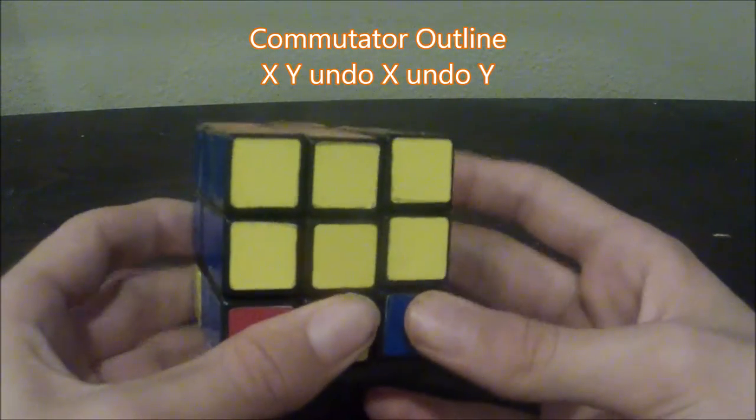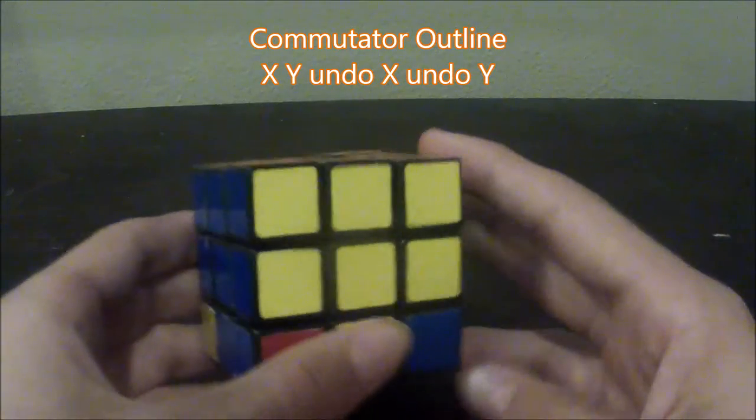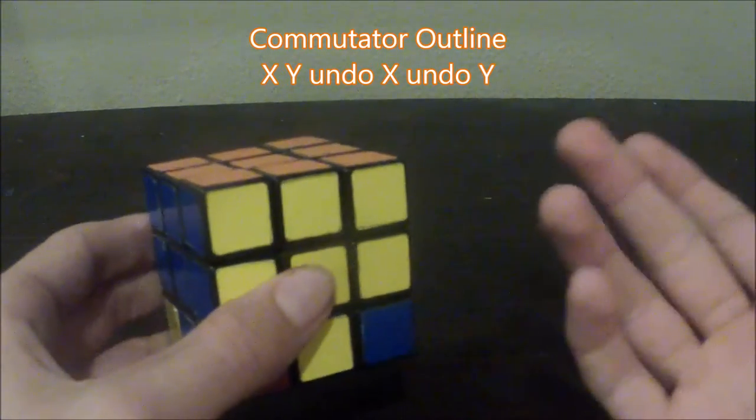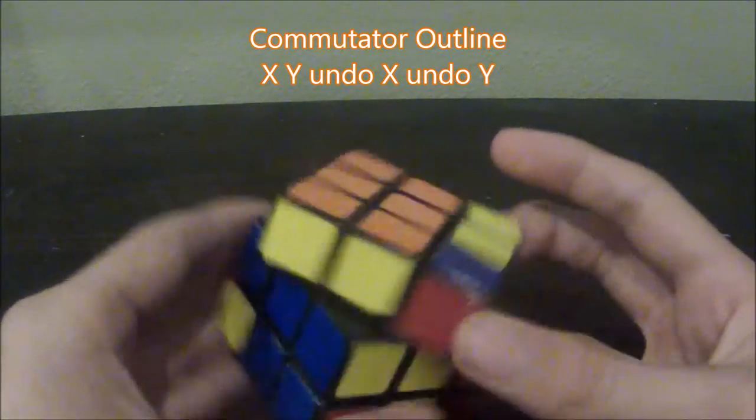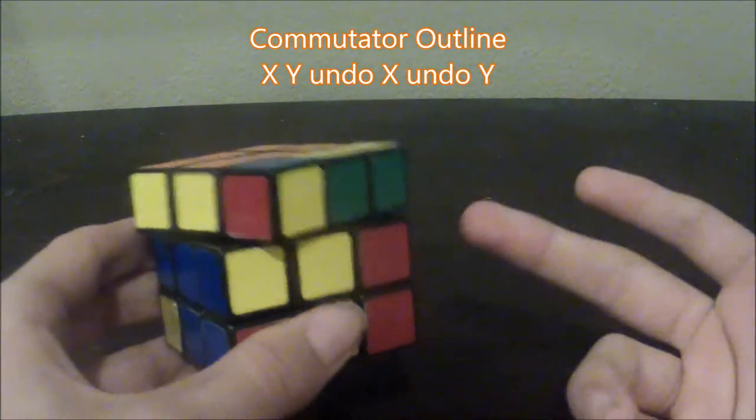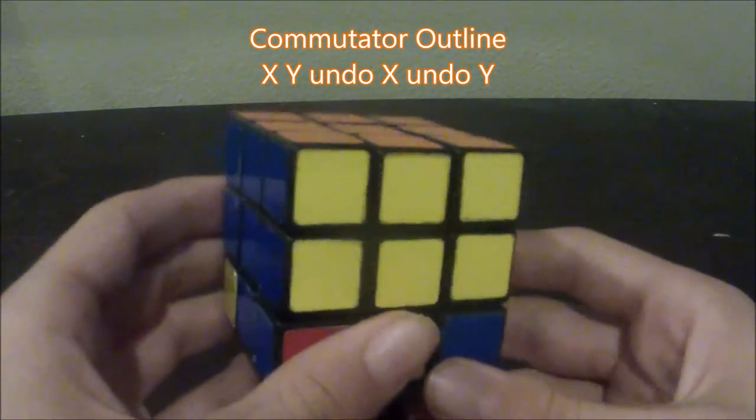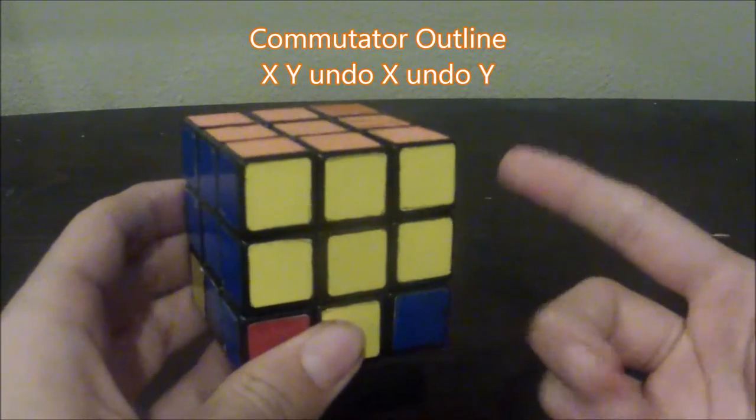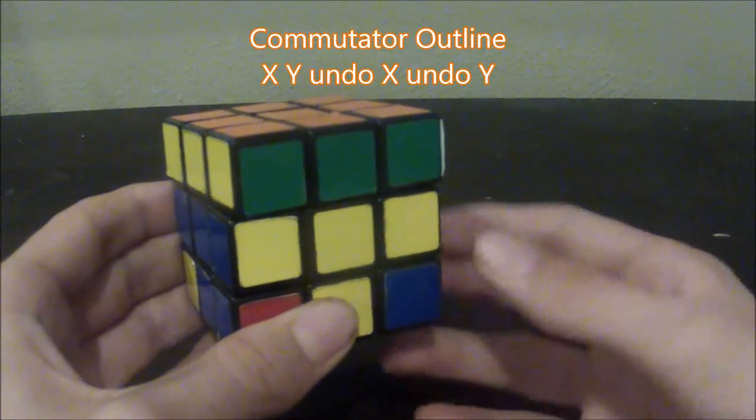Or X or Y could represent multiple turns. So, the length of that pattern is kind of deceiving because it can really be as long as you want. Let's do a quick example commutator. Maybe our X could be a U, and then our Y could be a D.